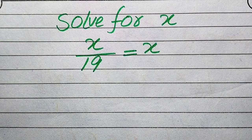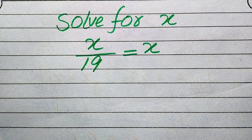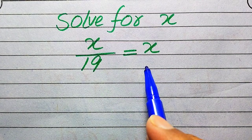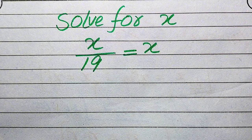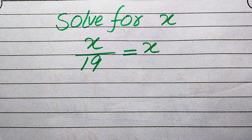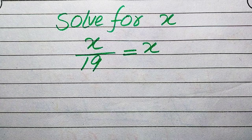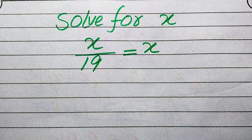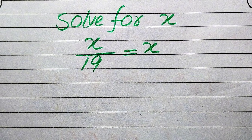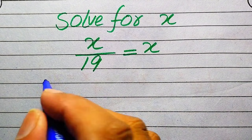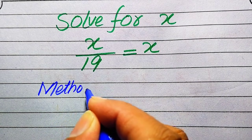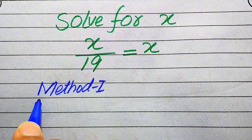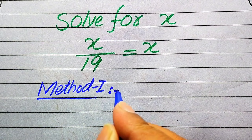Hello everyone. How to solve this problem for the values of x, if we have x divided by 19 equals x? We solve this problem for all the values of x. We will also verify which roots are solutions and which are extraneous. We solve this using two methods — please write any other method you know in the comment section.